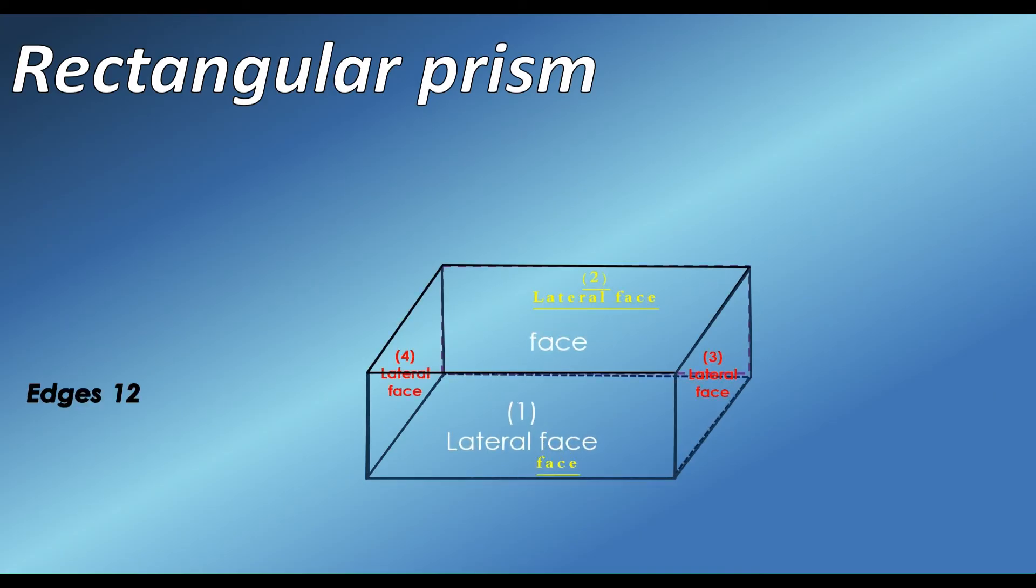To show us the illustrations of its edges, rectangular prism has 12 edges. Let's count: 1, 2, 3, 4, 5, 6, 7, 8, 9, 10, 11, and 12.